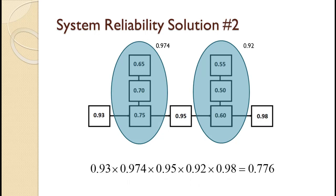To find the overall system reliability, we multiply the five series reliabilities together. As shown on the slide, that works out to 0.776.